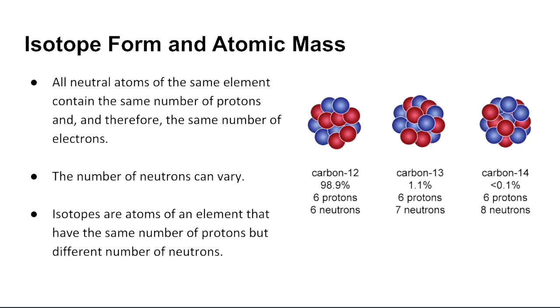So isotope form, last form that I want to address. All neutral atoms of the same element contain the same number of protons, and therefore the same number of electrons, provided that they're all atoms. But now the number of neutrons can vary. And when that neutron count varies, here we have the standard carbon that we can extract from the periodic table. So we write it down as carbon-12. That number after represents the mass number of that atom.